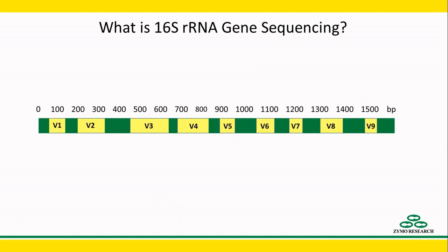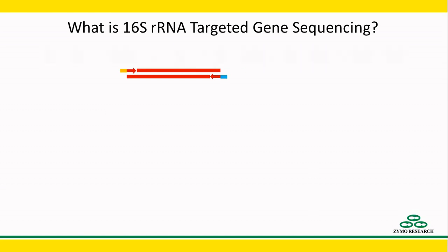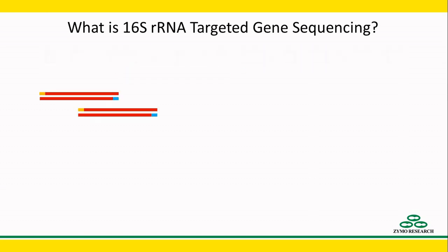By sequencing amplicons containing these regions, you can identify bacteria present in a complex community. For example, we can use a primer set whose amplicons include the V3 and V4 hypervariable regions.